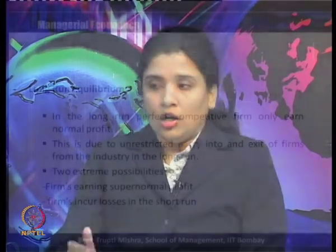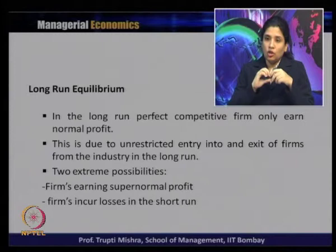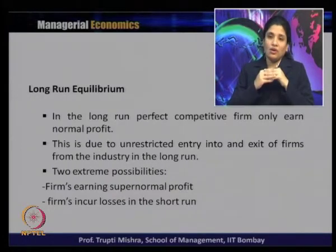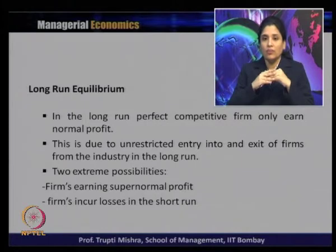Next we move to long-run equilibrium. In the long run, all inputs are variable and there is no fixed cost. In a perfectly competitive market, firms earn only normal profit in the long run — there is no loss and no super normal profit. This is due to unrestricted entry and exit of firms from the industry, which is a key characteristic feature of perfect competition.